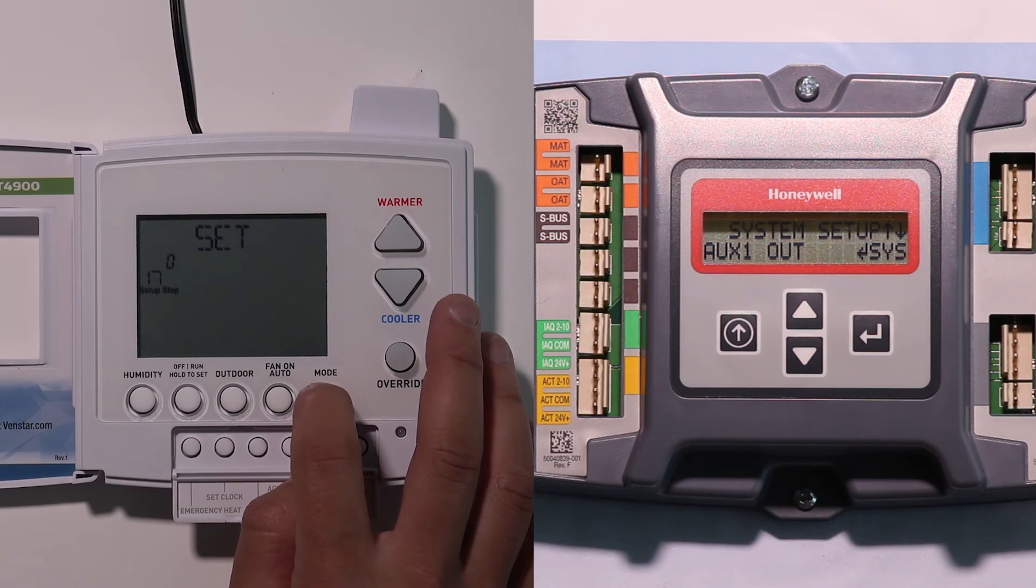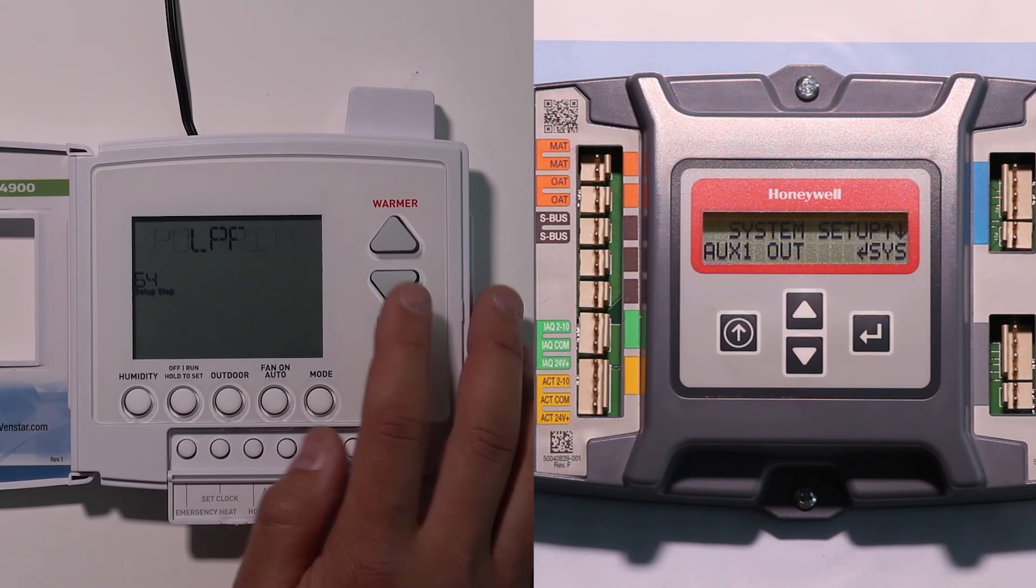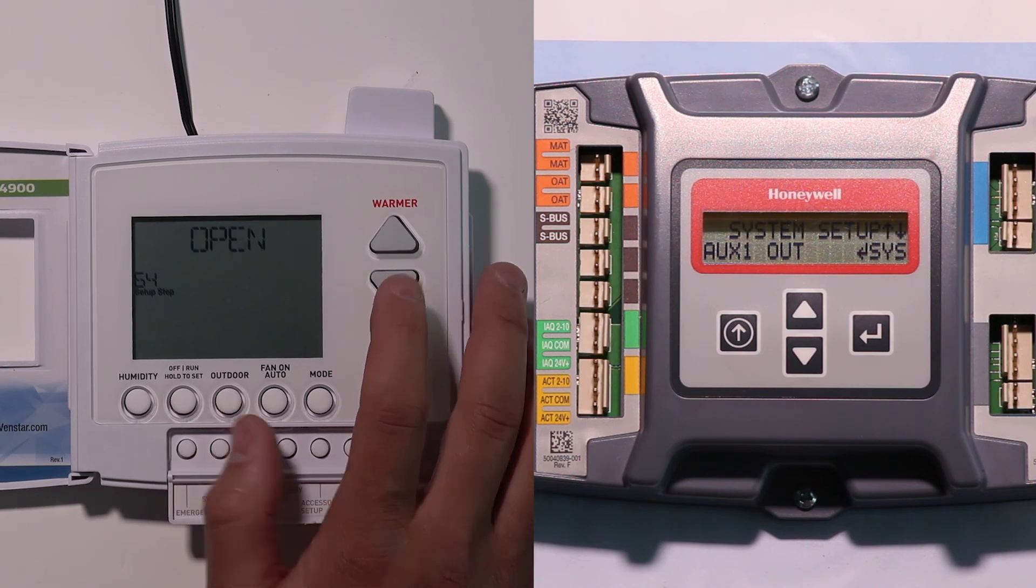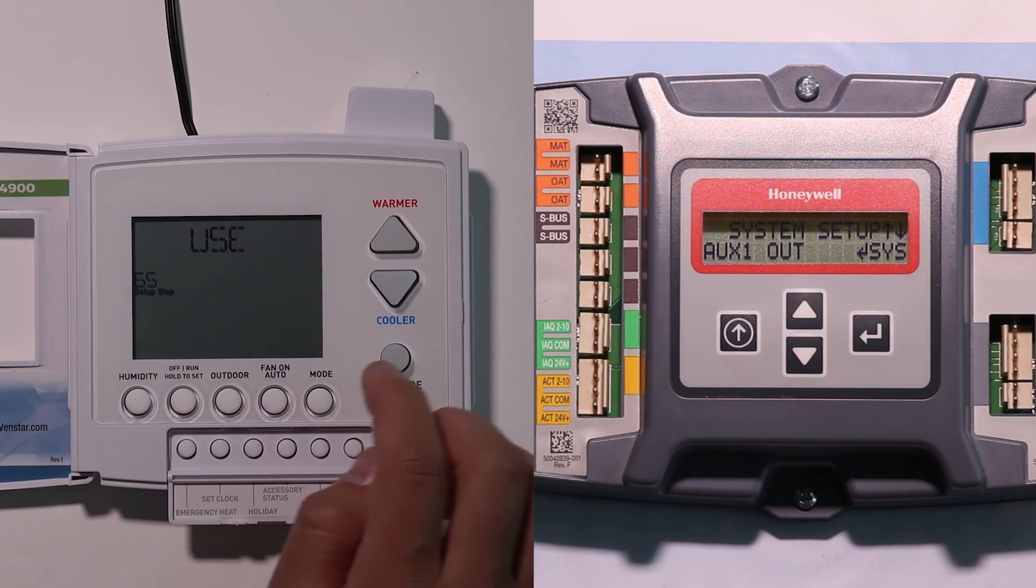And in this case, I want to get up to settings 64 and 65. So on setting 64, that tells me what my contact is going to be. I want it to be normally open. So that's what it is right now. If it wasn't, I can change it by hitting the up and down arrows between open and close. So I want normally open.